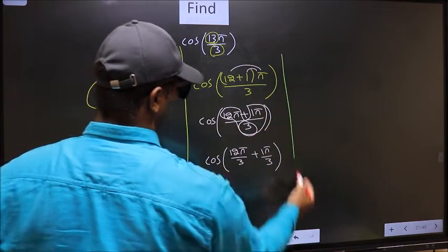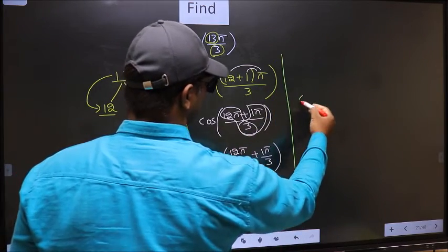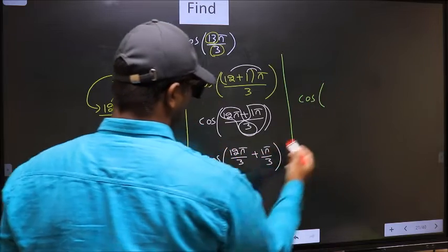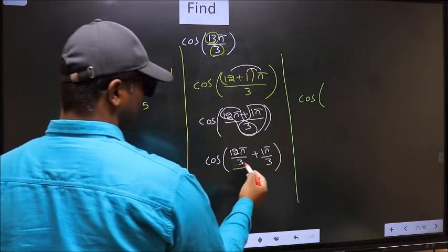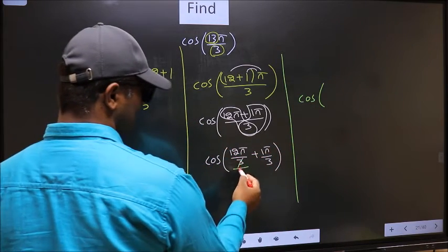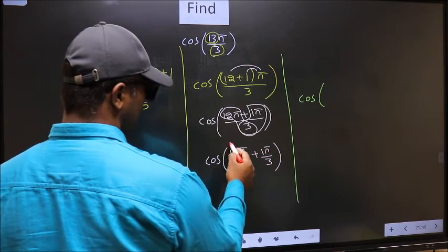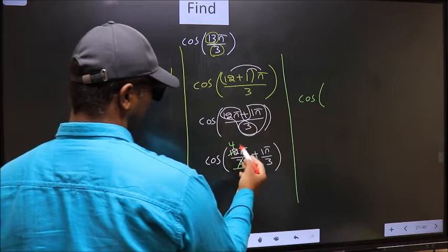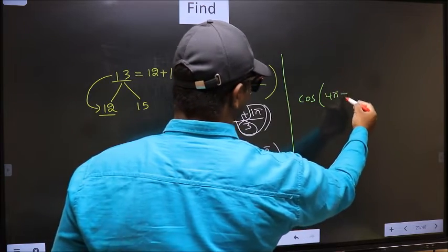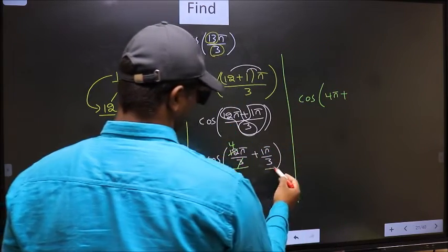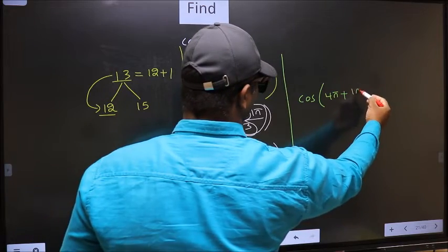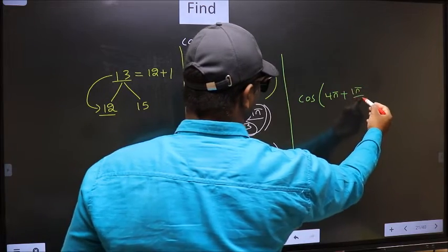Next, cos: here you should cancel. 3 into 3 fours — so we get 4π plus, with no change, 1π/3.